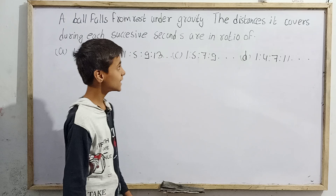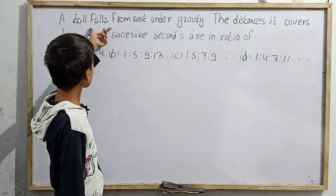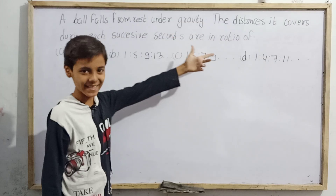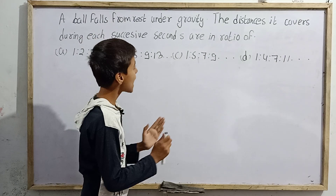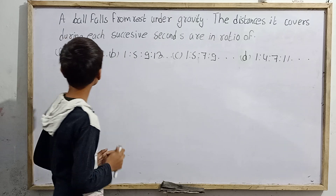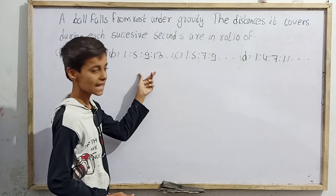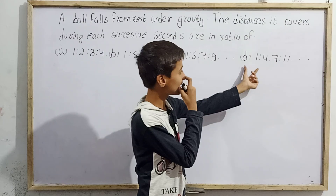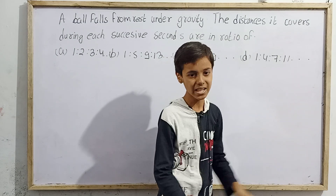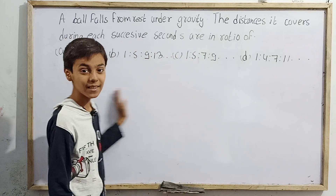Question two asks: a ball falls from rest under gravity. The distances it covers during each successive second are in the ratio of — option A: 1:3:1:2:3:4, option B: 1:5:9:13, option C: 1:3:5:7:9, and option D: 1:4:7:11 and so on. We have to find which option is correct.